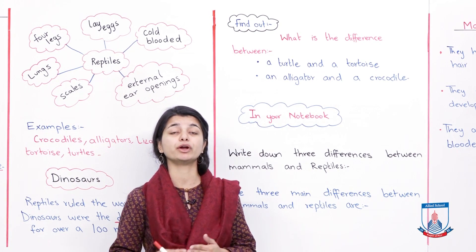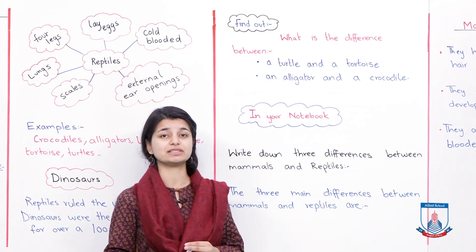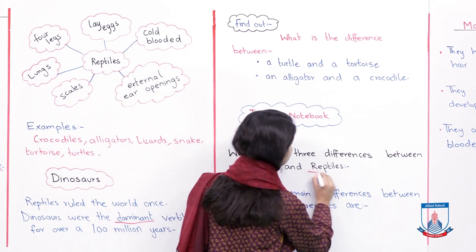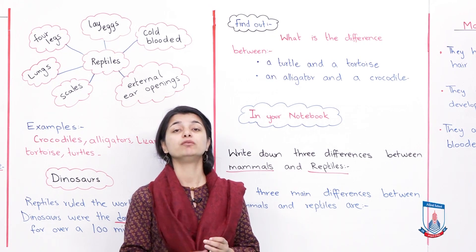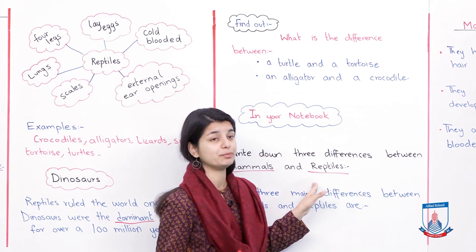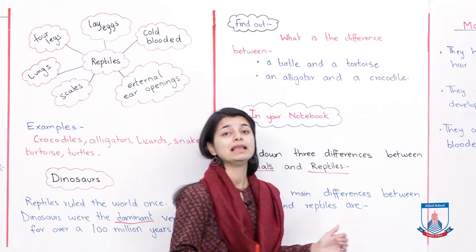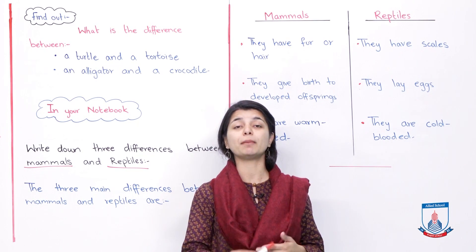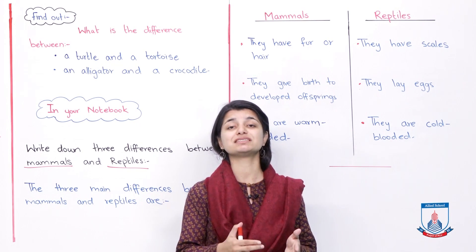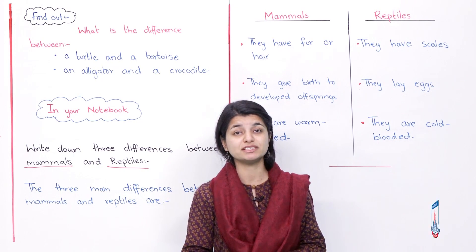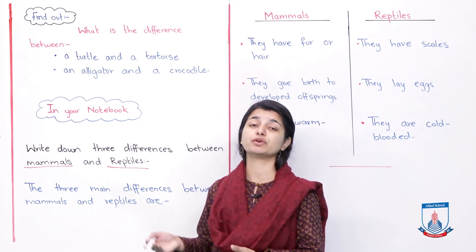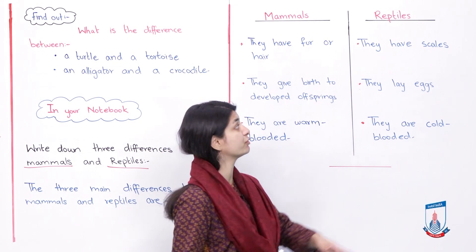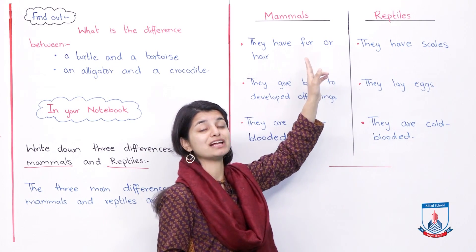Now we are wrapping up this unit with a question from your In Your Notebook exercise: write down three differences between mammals and reptiles. In the last lecture we studied mammals, and this entire lecture was about reptiles — so now we differentiate. The first difference is that mammals have fur and hair, whereas reptiles have scales on their body.